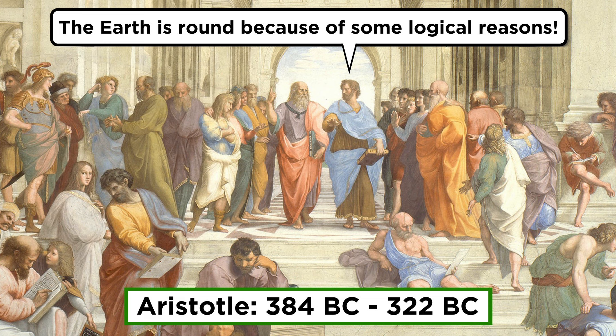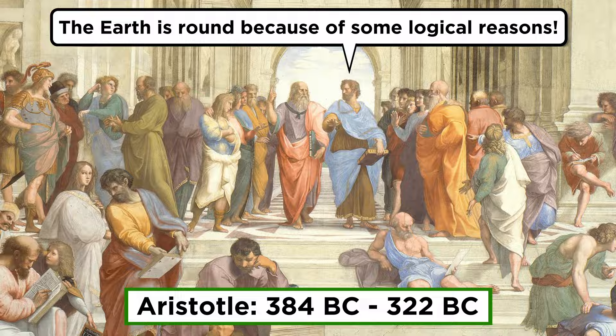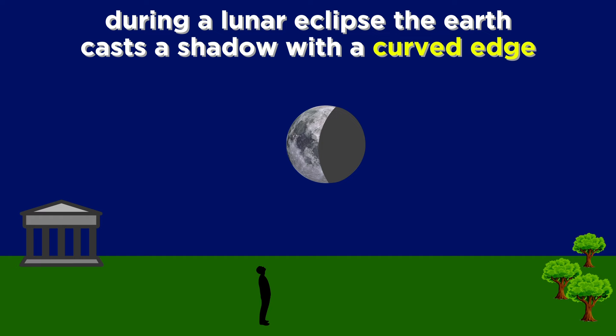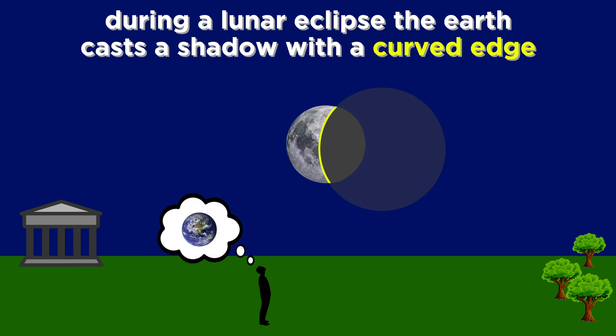But just a bit later, with Aristotle, a more logical approach arose. He noticed that during a lunar eclipse, the shadow cast on the moon by the earth has a curved edge. This is representative of earth's spherical shape.